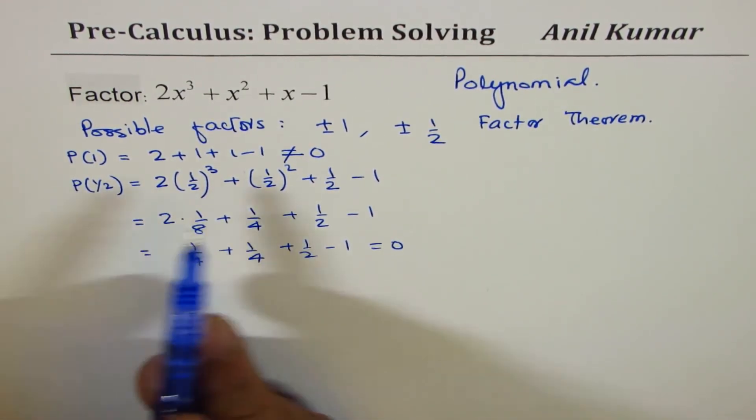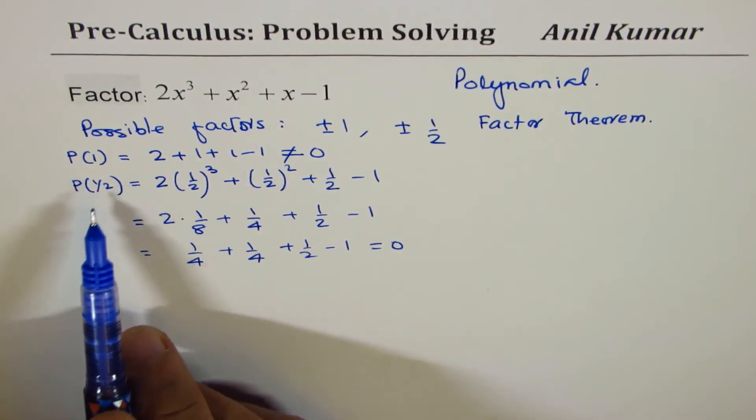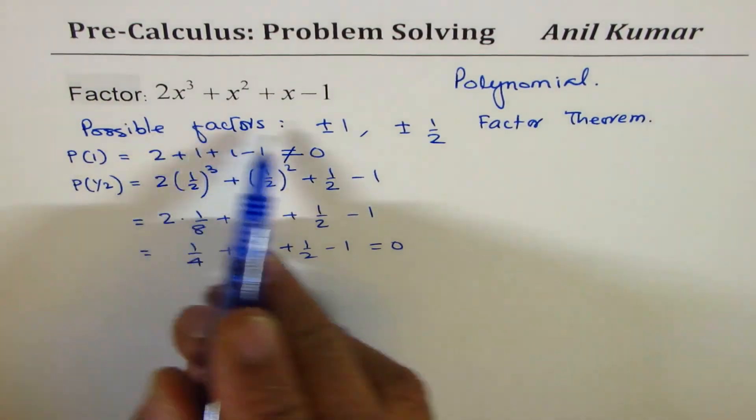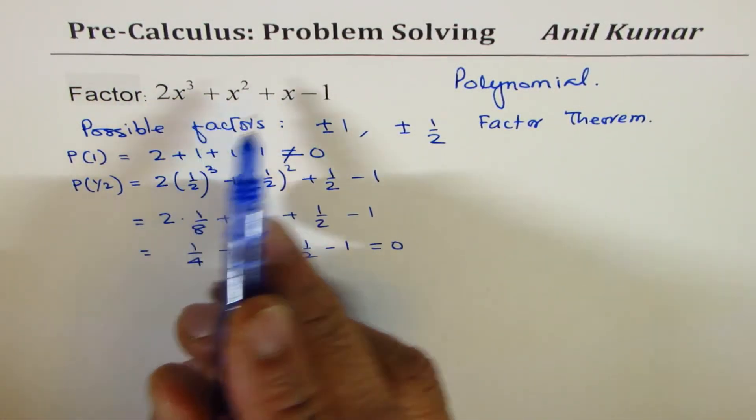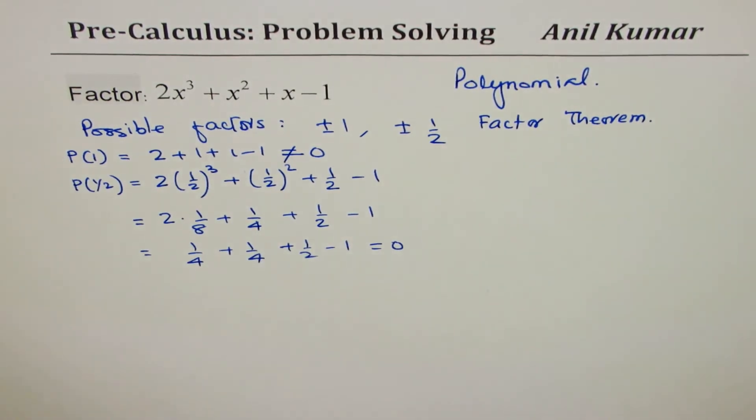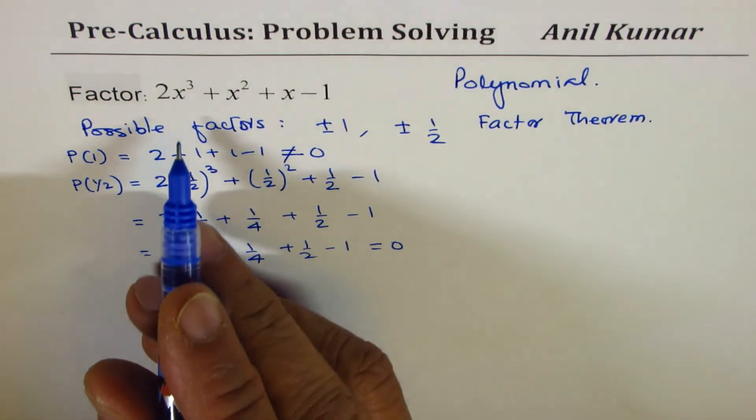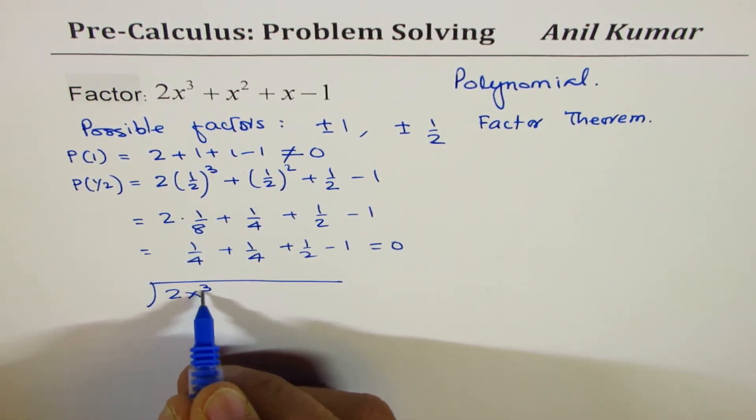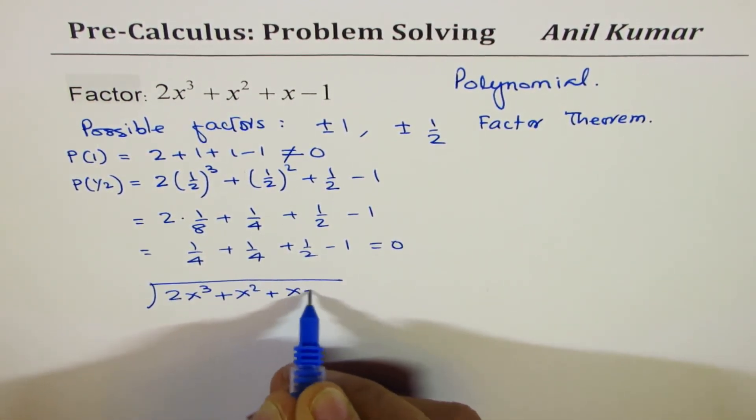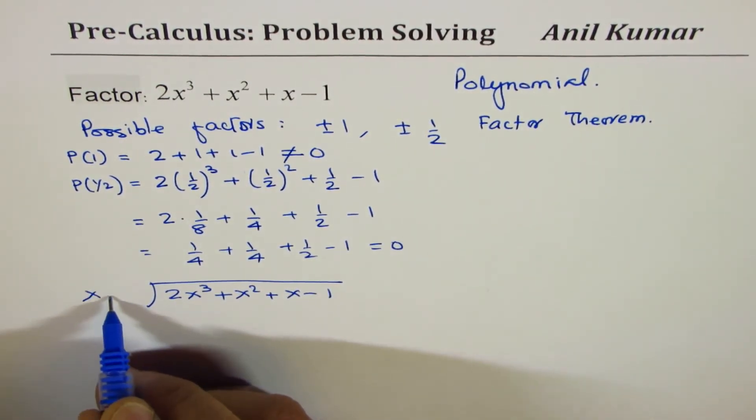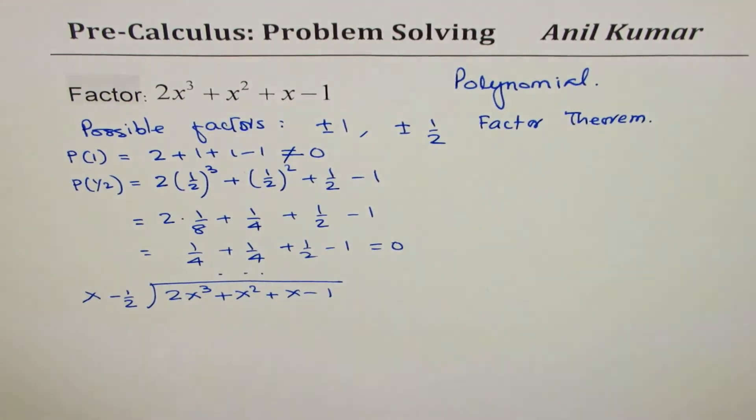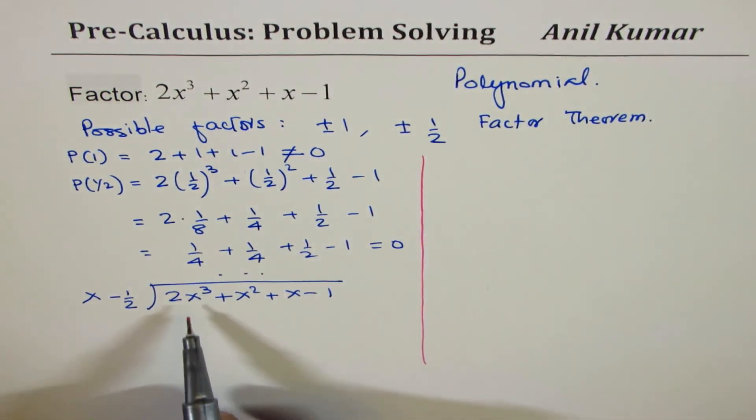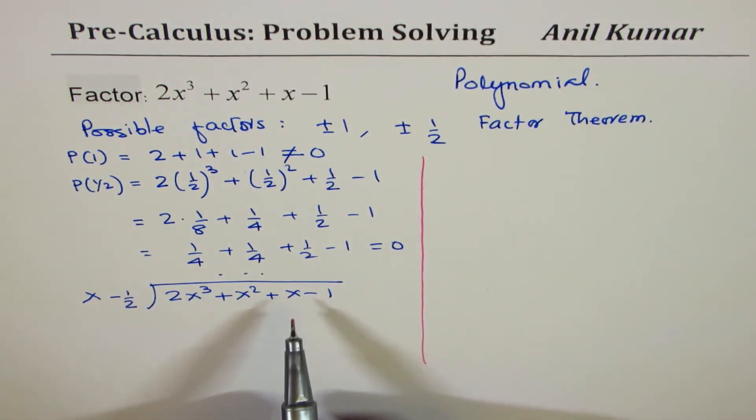So this simply means that 1/2 is a factor. I mean, x - 1/2 is a factor. So once you know that x - 1/2 is a factor, you could divide the whole expression and get it to a quadratic equation, which can be factored. So basically, we know that we could divide this expression 2x³ + x² + x - 1 by x - 1/2 and get a quotient here and our answer. So you could do this division, get your answer. Now, you could do long division or you could do synthetic division.